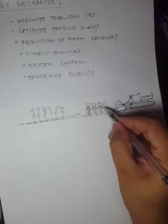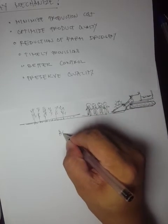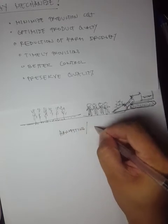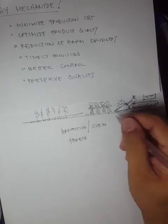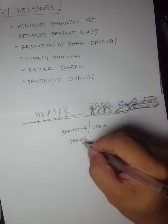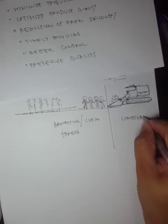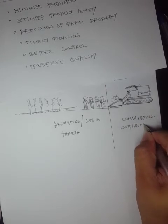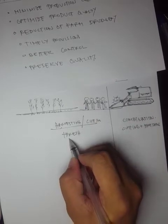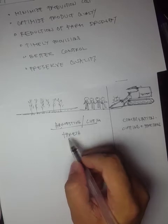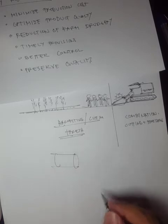With manual harvesting, you cut the stalks first, then separately process them in a thresher — a threshing machine that separates the paddy from the panicle. The combine harvester combines both cutting and threshing into a single pass, providing better control, timely provisions, and optimized product quality compared to manual two-step operations.